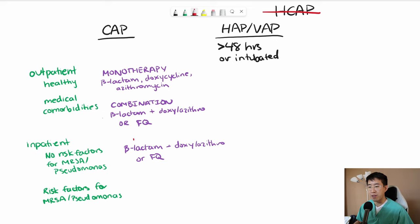On the inpatient side, you could do IV ceftriaxone, which is definitely going to be the most common thing that you're going to see here, plus azithromycin or doxycycline. And again, fluoroquinolone only reserved if they have a really bad penicillin allergy or something like that.